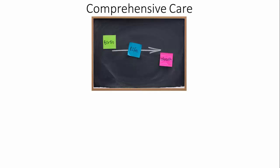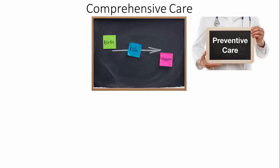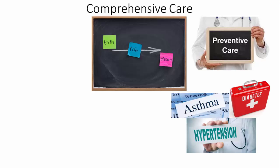Let's take a deeper dive into each of those concepts, starting with comprehensive care. It is care concerned about a patient's life from birth to death and all that may happen during their lifetime. It also involves preventive care — not just helping patients when they get sick, but assisting them before they get sick, which involves reaching out to patients who may not believe they need preventive care. Chronic care is also a big part, ensuring chronically ill patients receive the care they deserve.